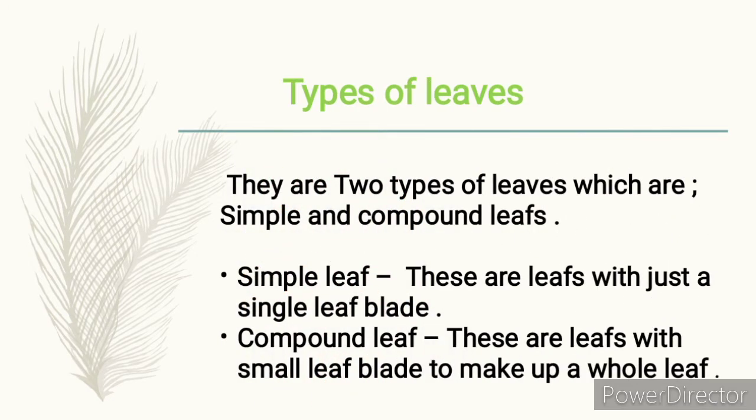Now let's look at the types of leaves. There are two types of leaves: the simple leaf and the compound leaf. Simple leaves are leaves with just a single leaf blade — yes, a simple leaf has just a single leaf blade. Compound leaves are leaves with small leaf blades that make up a whole leaf. That's what a compound leaf is all about.